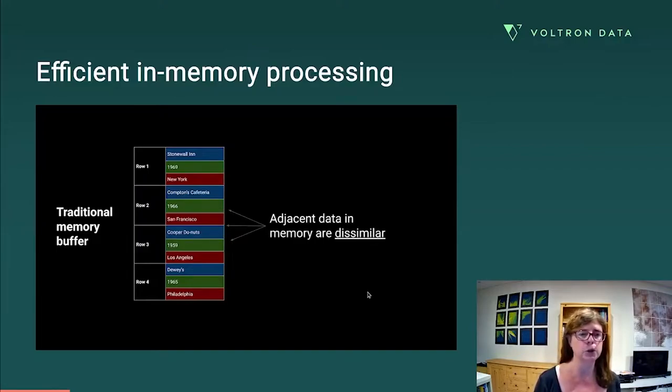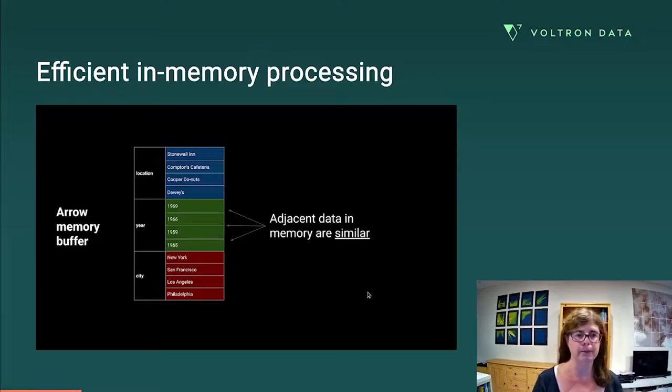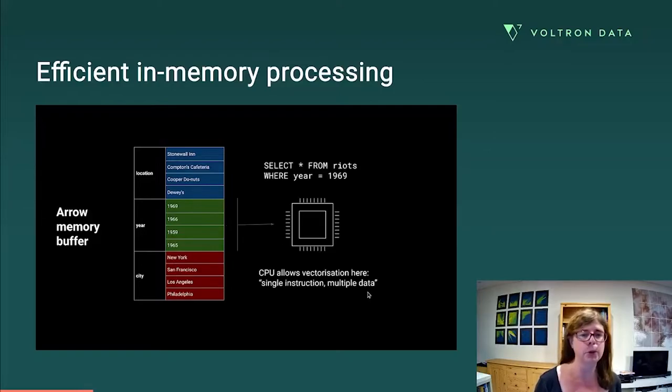So if you have your data stored row-wise in memory, adjacent objects in memory tend to be different to each other. You cannot send the same instruction to handle multiple adjacent parts of memory. If you organize things column-wise in memory, you can. And on modern processors, that makes a big difference. Because you can do this thing that all of these smart hardware people tell me is great, called single instruction multiple data. You can vectorize your operations at the CPU level. A bunch of different objects in memory can be handled with a single instruction, and that speeds things up. That's cool.